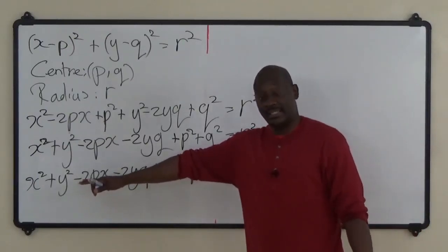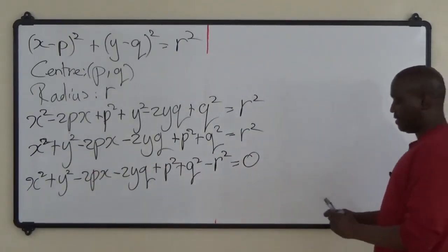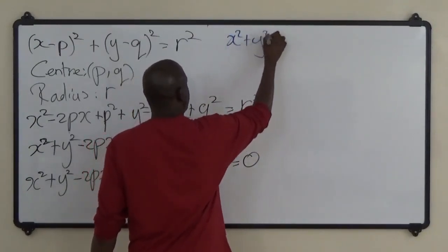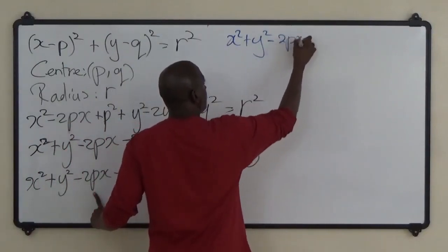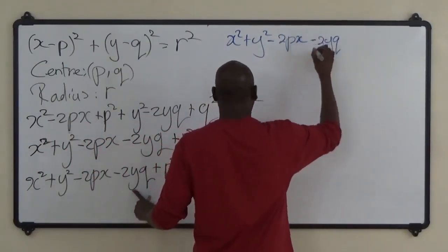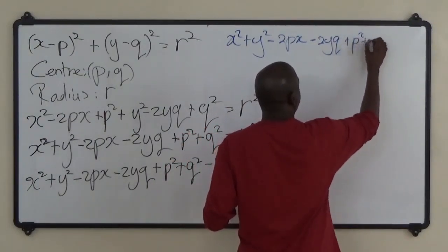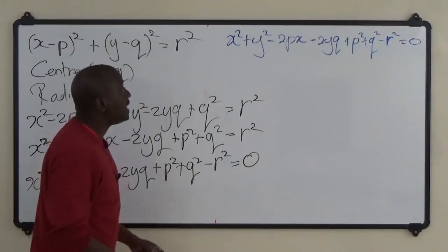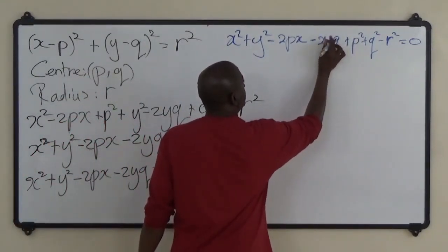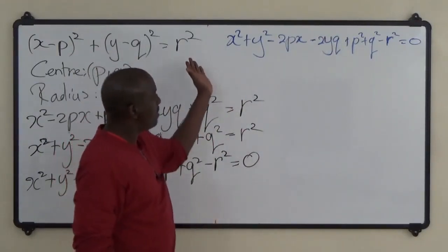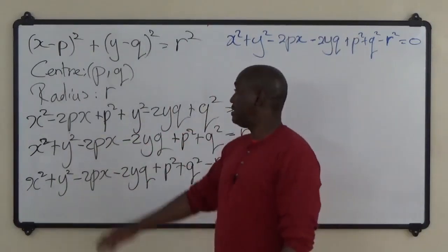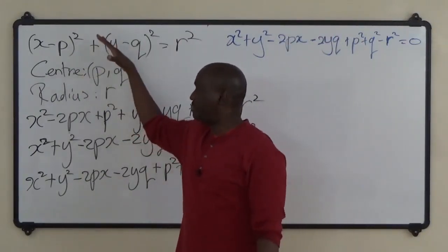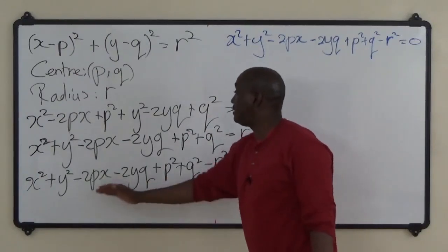So basically, you don't have to put yourself through the stress of memorizing the general form. What I would suggest is to remember the standard form — it's much easier to remember. If you can remember the standard form, you can just expand your way out and get the appropriate equation.